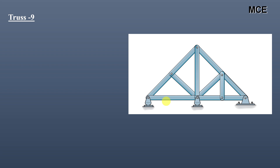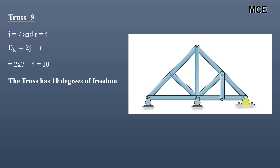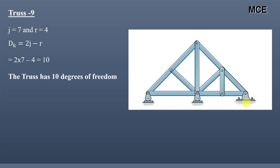For truss nine, this truss has a total of seven joints and four reactions — one at each of three rollers and two at a hinge support, for a total of four reactions. The value of dk for this truss is 10, meaning this truss has 10 degrees of freedom.